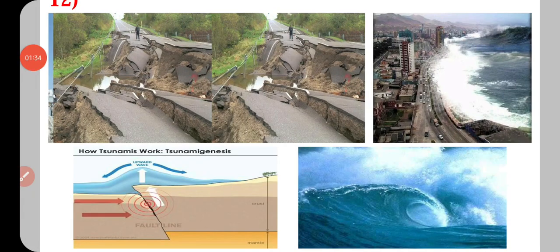Like you can see here, these are some pictures of the damage caused by the earthquake. This is a whole road which is cracked and collapsed due to the earthquake. And here you can see high waves caused by the earthquake under the seabed. Seabed pe earthquake aane se ye high waves dekh sakti hain jo shore se takra rahi hain. Inko hum tsunami bolte hain.